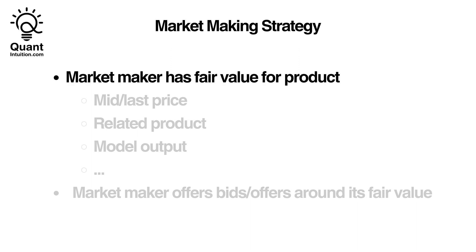A market-maker typically always has a fair price for the product that they are making markets for. As we saw in the video on fairs, this fair value estimate can be based on many factors. One very simple fair value estimate could simply be the mid-price or last traded price of a product. This might seem oversimplified, but it actually can be sensible, especially if you have a very highly liquid security with a minimum spread and you do not have any special information. Simply using the mid-price can make sense.